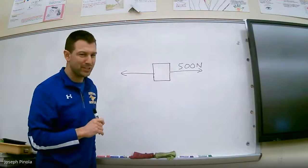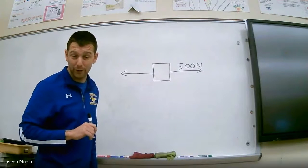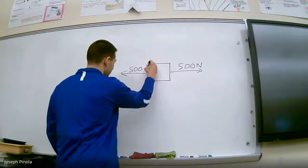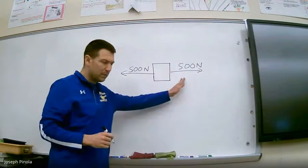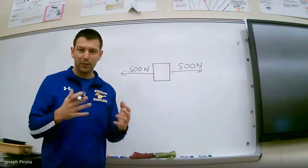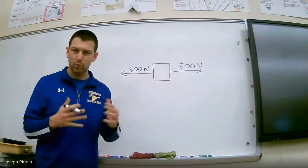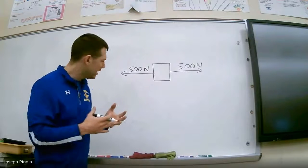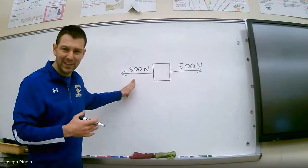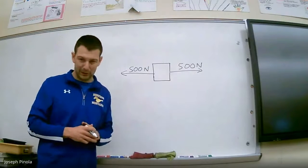Do you know how much that force needed to be? If you said 500 newtons, you'd be right. I was applying a force of 500 newtons in one direction, but I couldn't get the fridge to accelerate. That's because there was another force going against it of equal magnitude—500 newtons going back the other way.